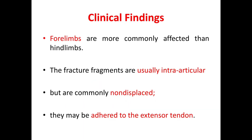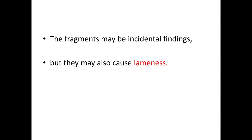Coming to the clinical findings, forelimbs are more commonly affected than hind limbs. The fracture fragments are usually intra-articular but are commonly non-displaced, and they may be adhered to the extensor tendon. The fragments may be incidental findings, but they may also cause lameness.